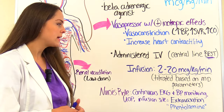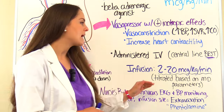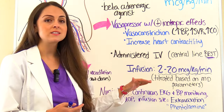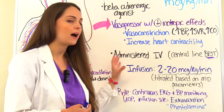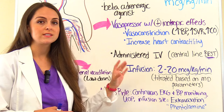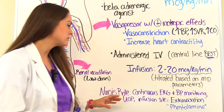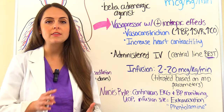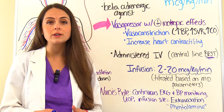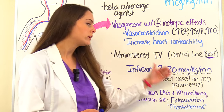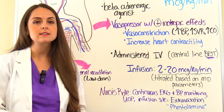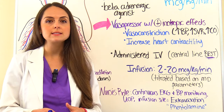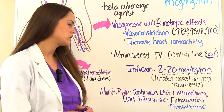The dopamine infusion rate is anywhere between 2 to 20 micrograms per kilogram per minute, depending on the parameters set by the physician. As a nurse you will be titrating this drug based on whatever the physician wants. The patient will need to be on continuous EKG monitoring, since dopamine can significantly increase the heart rate. You'll also be monitoring blood pressure, urinary output — because of how dopamine influences kidney perfusion — and of course watching that IV site.